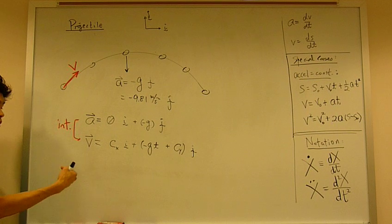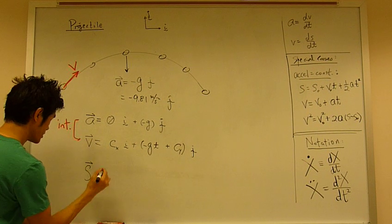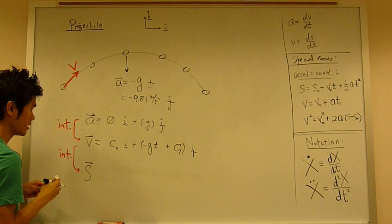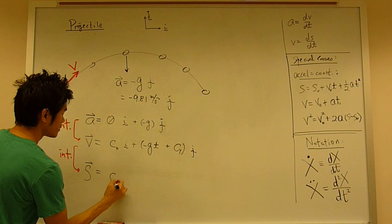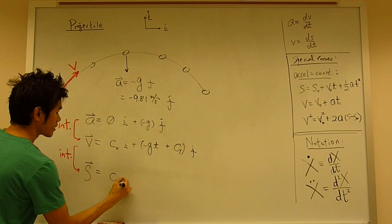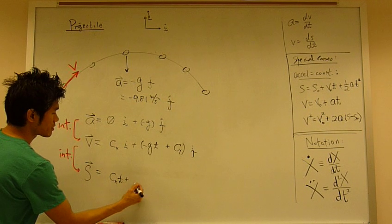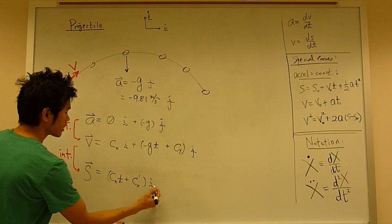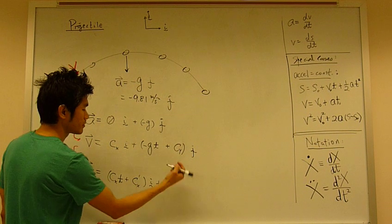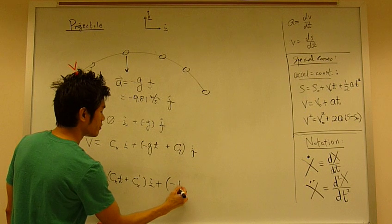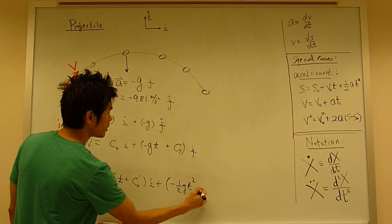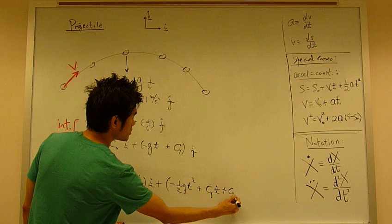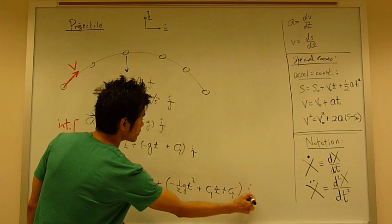We can integrate once more to get the position. That gives us v_x times t, plus some other constant - let's call it x_0, in the i-direction. Plus, integrating the j component: negative one-half g t squared, plus v_y times t, plus y_0 in the j-direction.